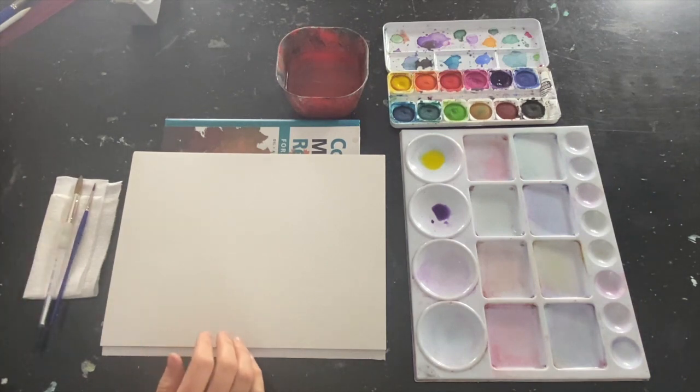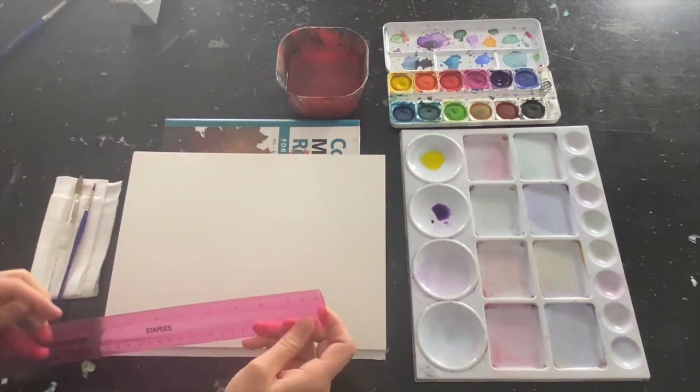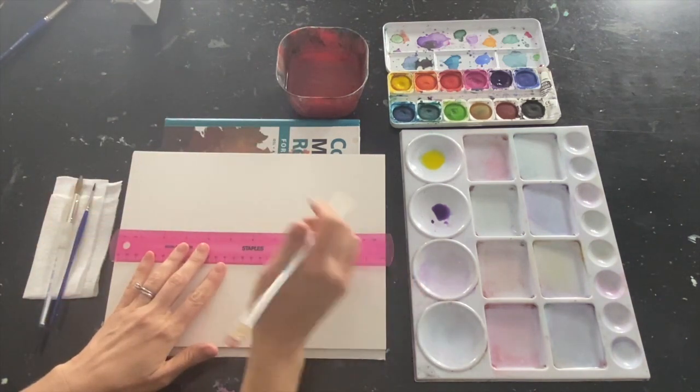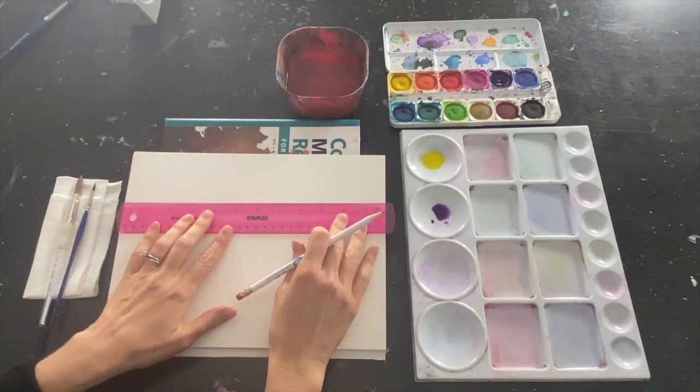Now what we're going to start with, we want to create a little grid. You're going to need your straight edge and a pencil, and we're just going to create a grid. I'm going to do a few.